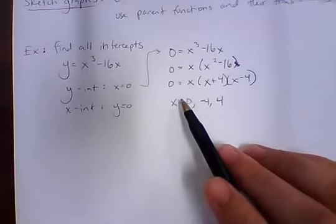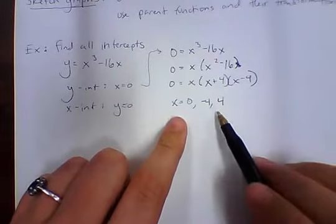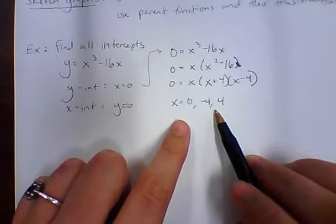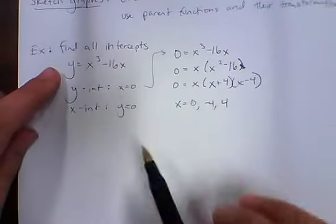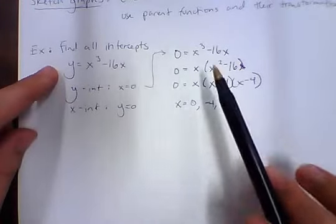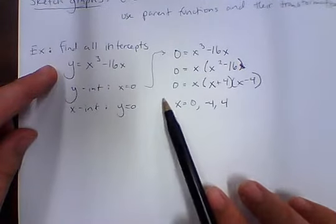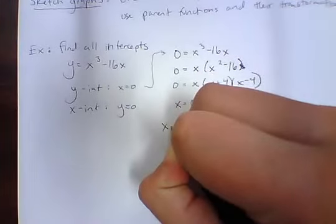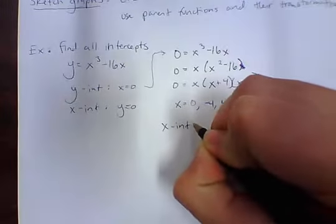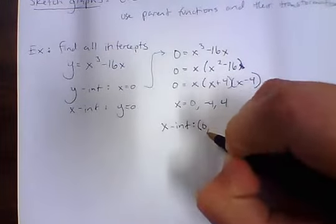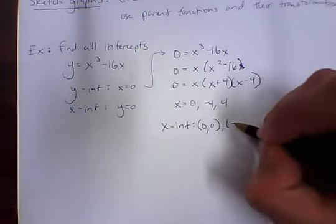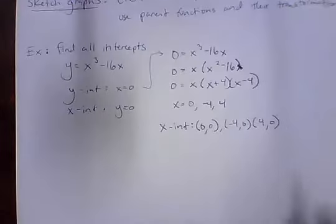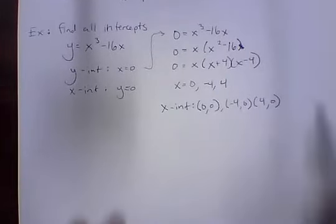However, in AP we have to be very careful about how we report our answers. The question asks us to find all intercepts, so we don't just report x values — we report them as coordinates. So our x-intercepts are at (0, 0), (−4, 0), and (4, 0).